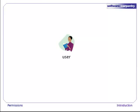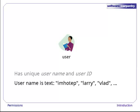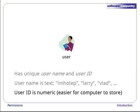Let's start with a single user. She has a unique username and user ID. Her username is textual, and her user ID is an integer. It might seem redundant to have this as well as her username, but integers are easier for computers to work with.